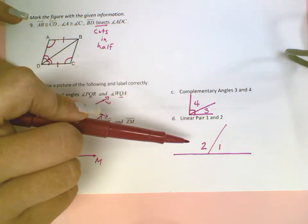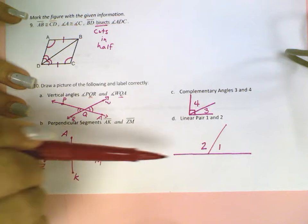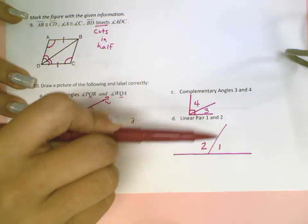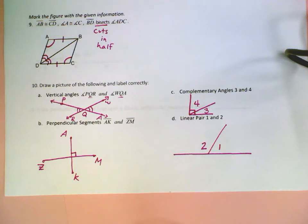You could have put the 1 on this side, the 2 on this side. And it doesn't matter where that line is as long as you have a straight line and then two angles that create it.